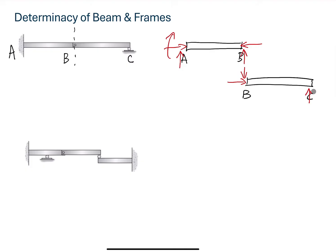The total reaction force R equals six. We have two members, and for each member we can write three equations of equilibrium. So three times n equals six. Comparing R to 3n, we see R equals 3n, so this beam structure is a determinate structure. That concludes the first example.